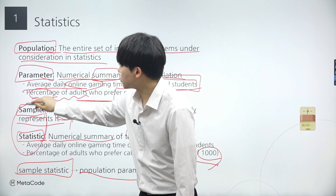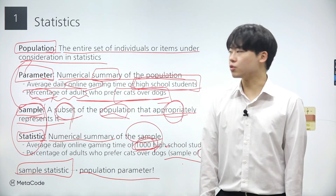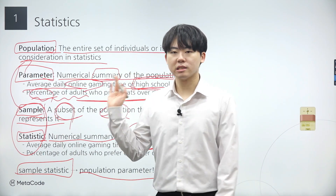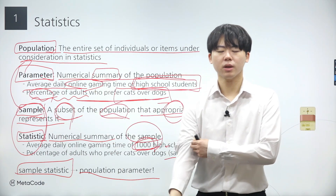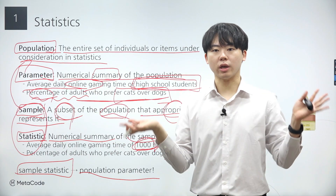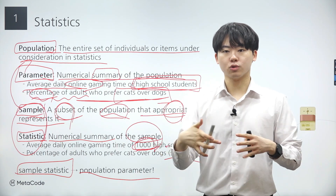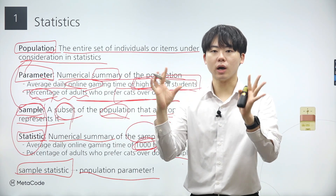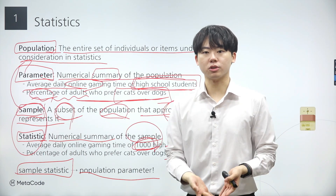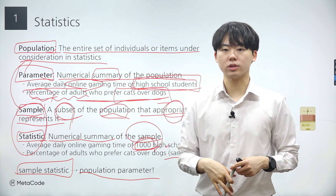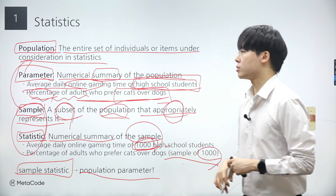Thus, the fundamental flow of an inference begins with these two concepts below and eventually leads to the two concepts above. It's crucial to note that our primary focus lies in understanding what parameters are. When we calculate the mean of our sample data and so on, it's all geared towards inferring the parameters of the assumed population and explaining the population itself.